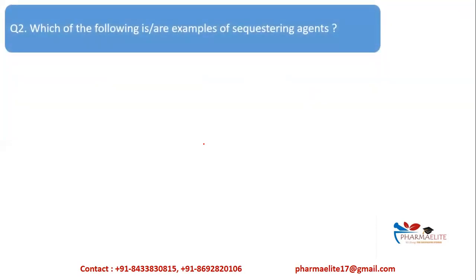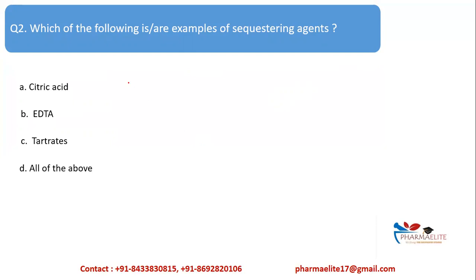Next MCQ: Which of the following are examples of sequestering agents — citric acid, EDTA, tartrates, or all of the above? As we saw in the first video, sequestering agents are compounds with the capacity to form water-soluble chelates. The process is called sequestering, and it is the property by which a metal is suppressed without removing it from solution. The correct answer is option D — all of the above.